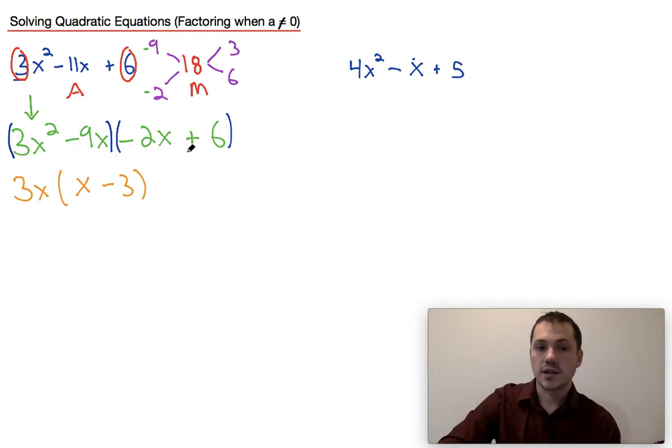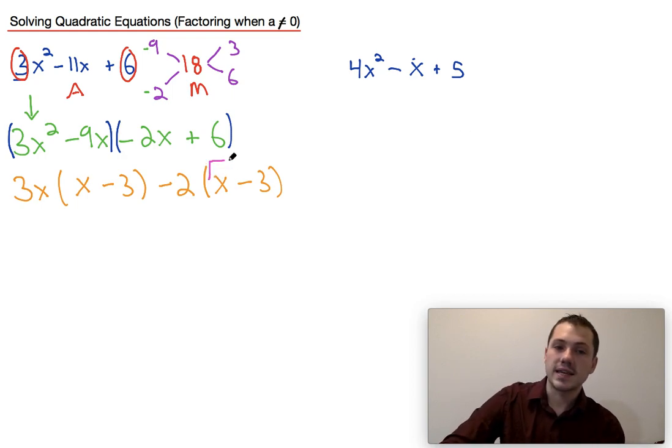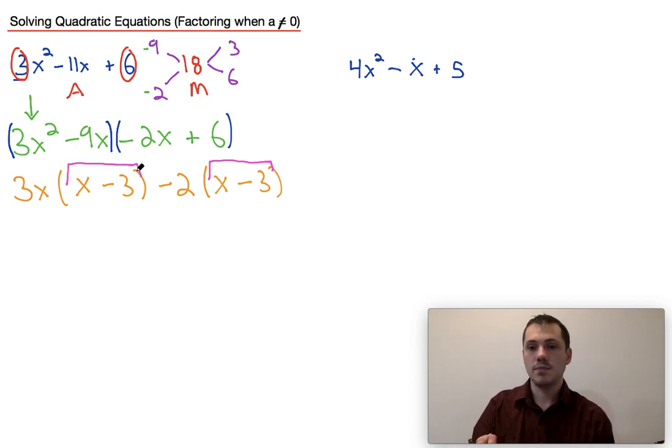Now I do the same thing for the right term. For negative 2 and 6, I can take a negative 2 out. The reason it's a negative 2 is because that's going to leave me with x minus 3. I'm just going to point something out here that this and this are the exact same, they need to be, and that's why I had to do negative 2 instead of positive 2, so that both terms left inside of the parentheses would be x minus 3.